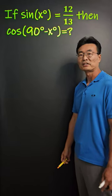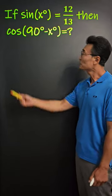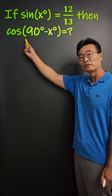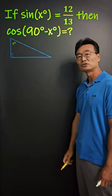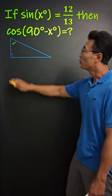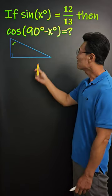If we're given sine of x degree is 12 over 13, and trying to find cosine of 90 degrees minus x degrees, we could start by drawing a right triangle.